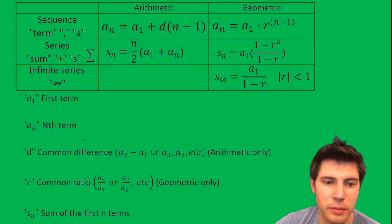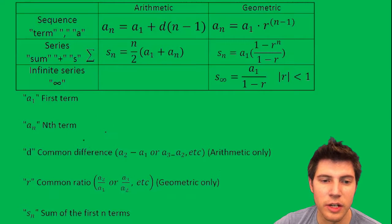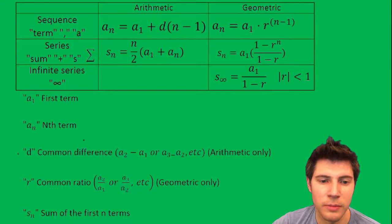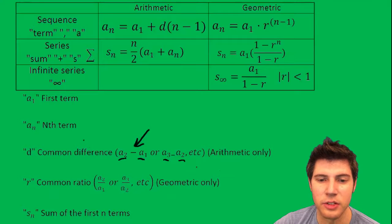A sub one is the first term. A sub n is the nth term. So a sub five would be the fifth term. d is the common difference. You can calculate that common difference by taking the second term minus the first term, or the third term minus the second term, etc.